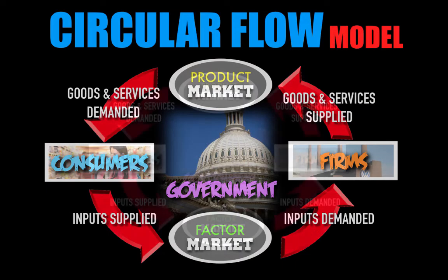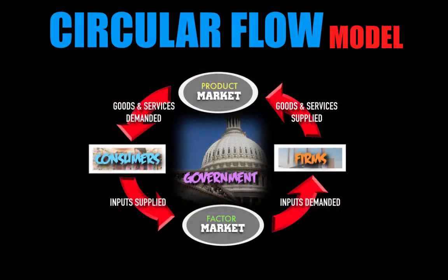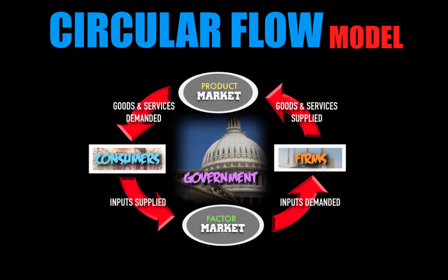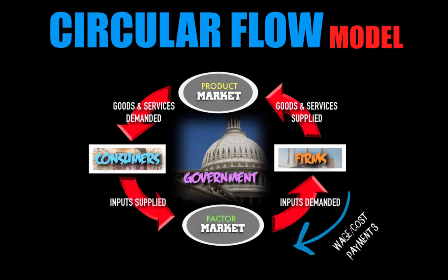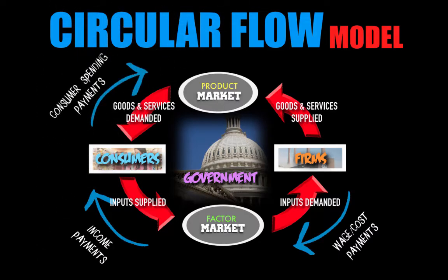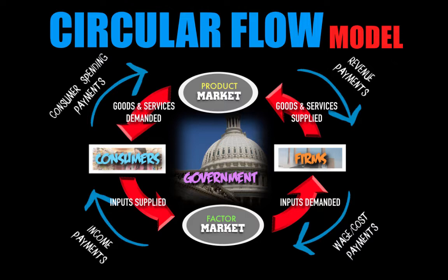There is also a flow of payments that makes the Circular Flow Model work. In order to purchase inputs in the Factor Market, firms must pay wages to consumers, which equate to cost payments for firms. Those wage payments become income payments that consumers use to buy goods and services through consumer spending in the product market. Consumer spending becomes revenue payments for firms.